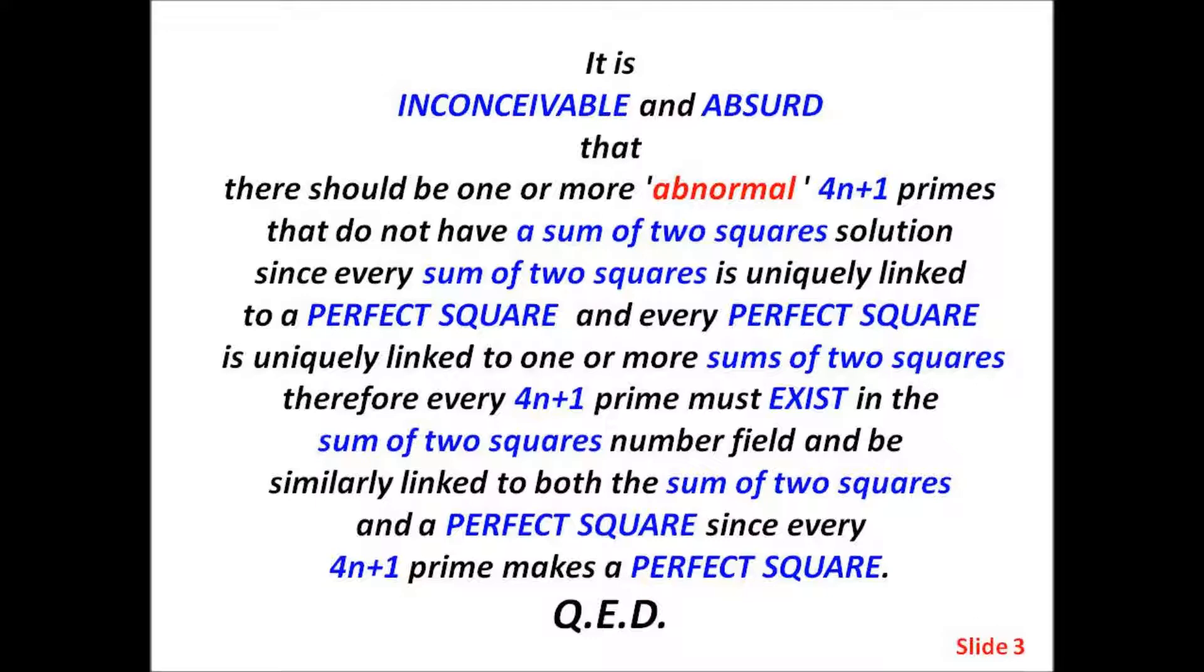Therefore, every 4n plus 1 prime must exist in the sum of two squares number field and be similarly linked to both the sum of two squares and a perfect square, since every 4n plus 1 prime makes a perfect square. QED.